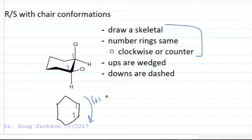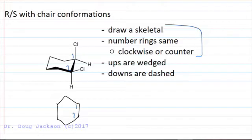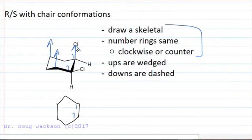After we do that, our ups are going to be wedged and our downs are going to be dashed. Any corner that points up on a chair conformation—here, here, and here—those are all going to be axial up. Any corner pointing down is an axial down, so there's always three axial downs. The down positions are here, here, and here, and the axial up positions are here...